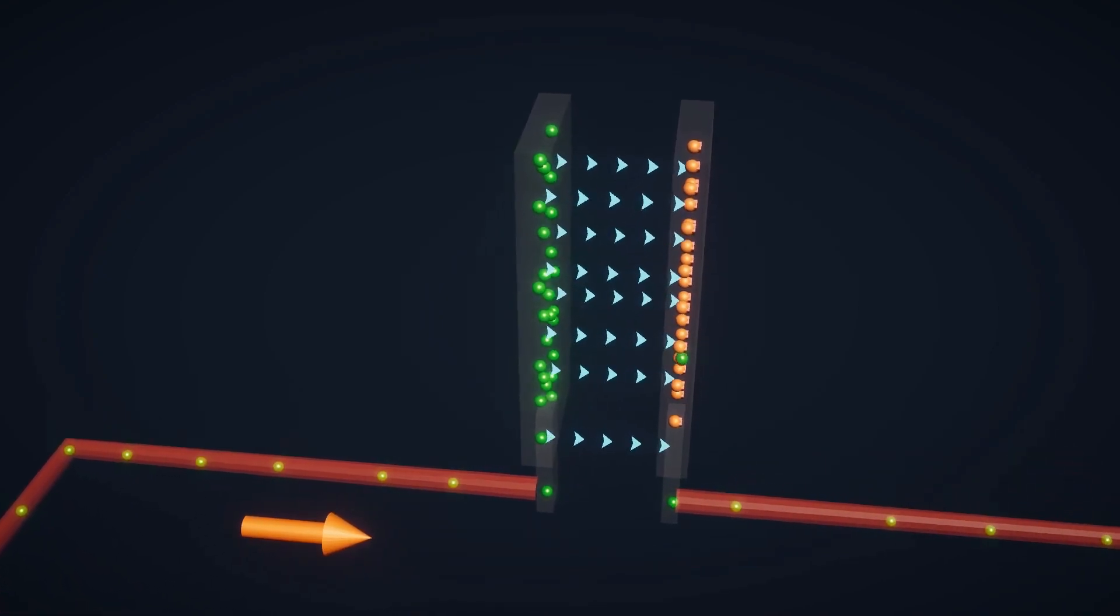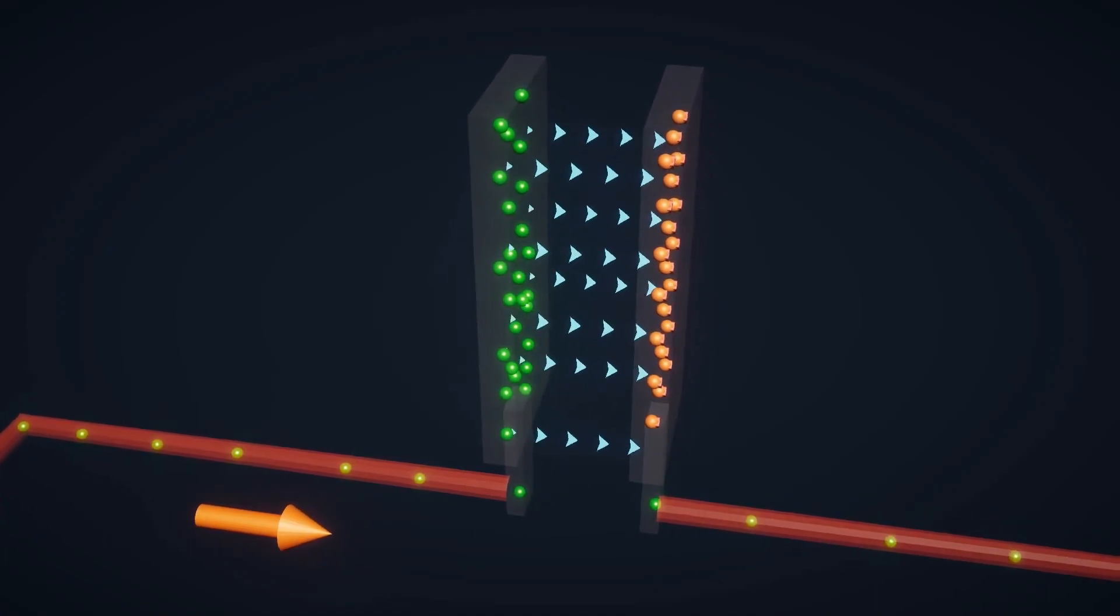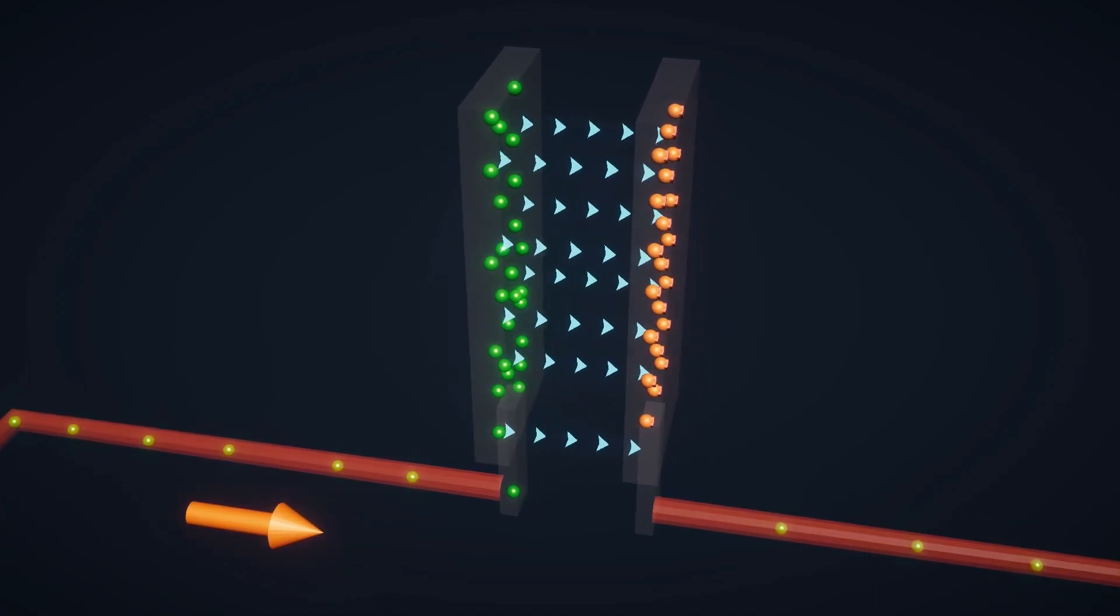After charges are created on both metal plates, the positive charge particles on the second metal plate start attracting the negative electron particles from the first metal plate.